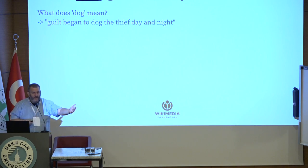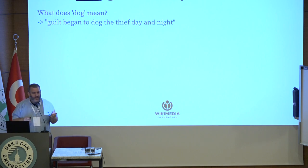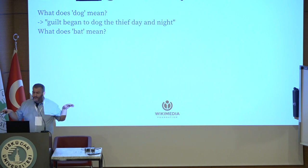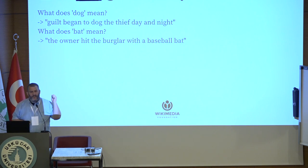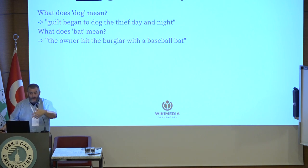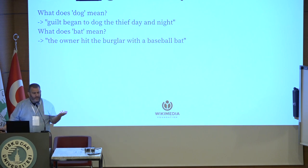There are examples of this in your languages as well. Just to give another example in English: what does "bat" mean? Like Batman, right? But it also means a stick — like a baseball bat. So "the owner hit the burglar with a baseball bat" doesn't mean the animal that sleeps upside down. These are two completely different nouns — both spelled "bat" but describing completely different objects. No problem for native speakers — we understand the sentence is not talking about an animal, because we have context and we have intelligence.